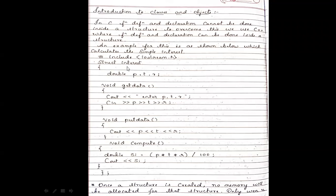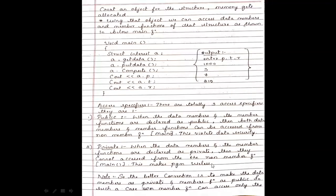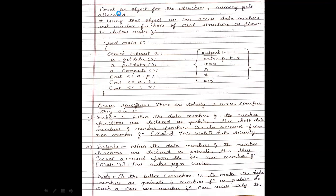We created a new data type called 'interest'. Once a structure is created, no memory will be allocated for that structure itself. Memory is allocated only when we create an object or variable for the structure.